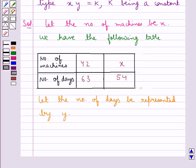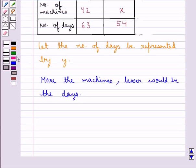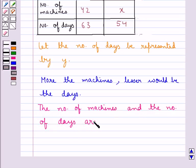We see that more the number of days, less machines would be required to produce the given number of articles, and lesser the number of days, more will be the number of machines required. So we say, more the machines, lesser would be the days. And hence we have the number of machines and the number of days are in inverse proportion.